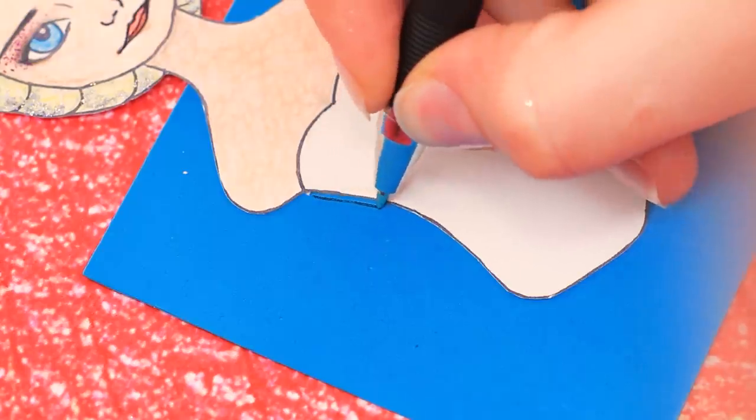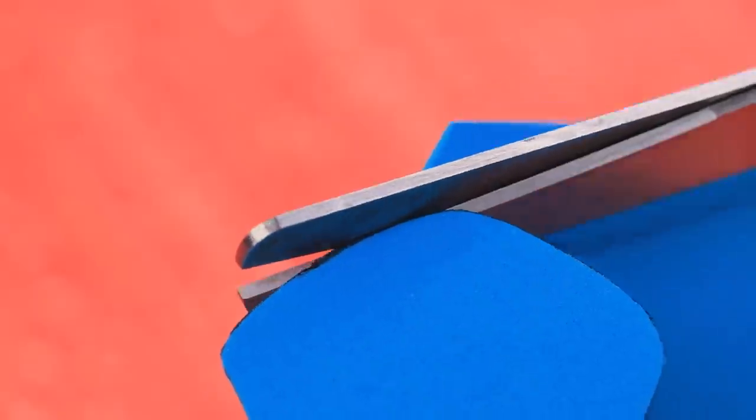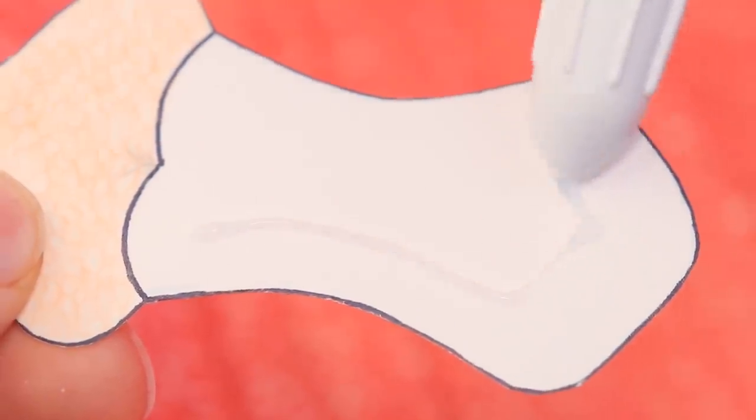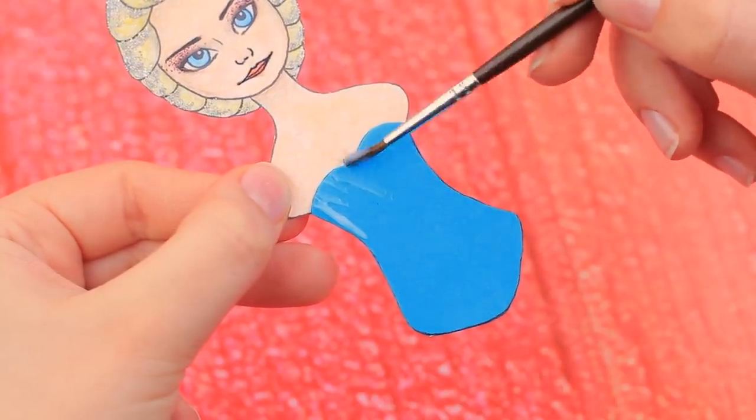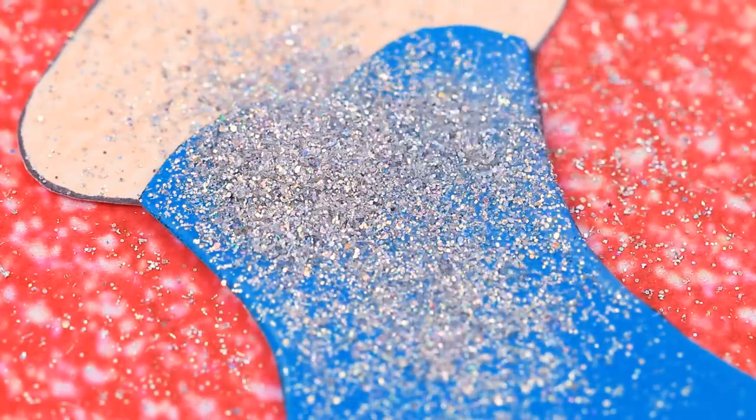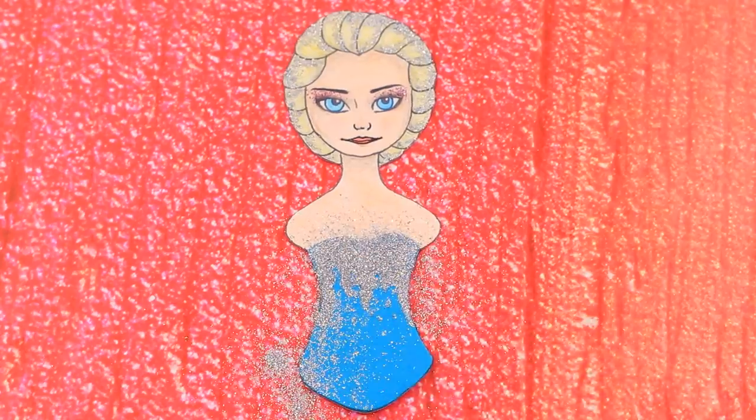Trace a part of the body on a sheet of blue foam paper and cut out a bodysuit. Use hot glue to join the pieces. Decorate the piece with frost. Apply white glue, sprinkle on some glitter and shake off the excess. Very little is left to do.